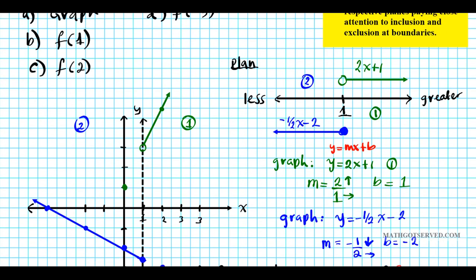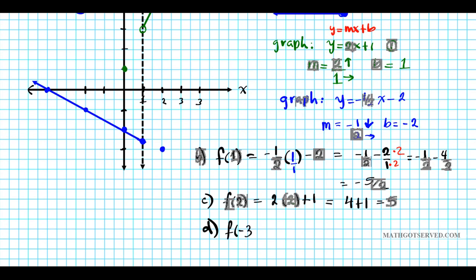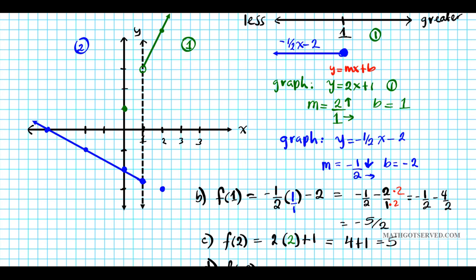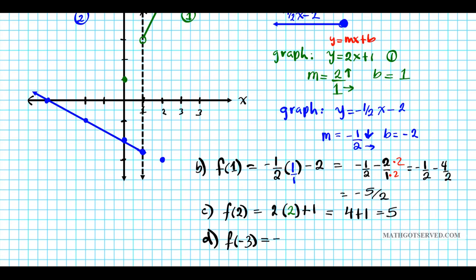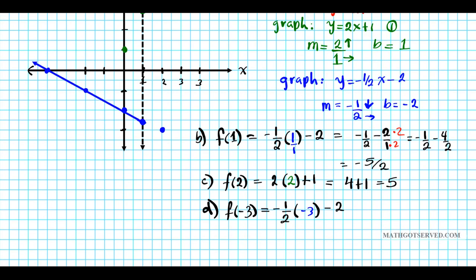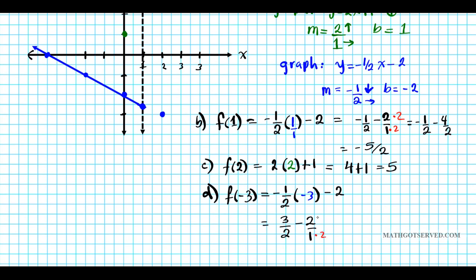The last part is f(negative 3). Since negative 3 is less than 1, we use the second function, negative one-half x minus 2. Plugging in negative 3: negative one-half times negative 3 minus 2. Negative times negative gives positive, so we get 3 over 2 minus 2. Writing 2 as 4 over 2, we get 3 over 2 minus 4 over 2, which equals negative 1 over 2. So f(negative 3) equals negative one-half.